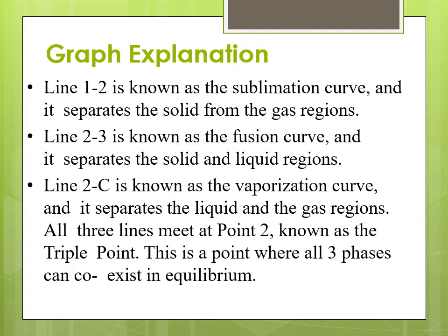Coming to the explanation of the graph: line 1 to 2 is the sublimation curve, because if the pressure of the system is below the triple point pressure, then heating of the solid results in sublimation. It separates the solid from the gas regions. Line 2 to 3 is the fusion curve, which represents the state at which solid is in equilibrium with liquid. Line 2 to C is the vaporization curve, where liquid begins to vaporize and it separates the liquid and gas regions. The fusion, vaporization, and sublimation curves all meet at the triple point, where all three phases coexist in equilibrium.